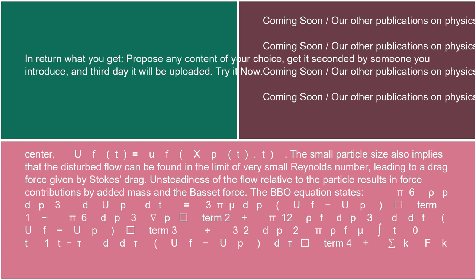Unsteadiness of the flow relative to the particle results in force contributions by added mass and the Basset force. The BBO equation states: (π/6) ρp dp³ (dup/dt) = 3π μ dp (uf − up) [Term 1] − (π/6) dp³ ∇p [Term 2] + (π/12) ρf dp³ (d/dt)(uf − up) [Term 3] + (3/2) dp² √(π ρf μ) ∫[t0 to t] (t − τ)^(−1/2) (d/dτ)(uf − up) dτ [Term 4] + Σk fk [Term 5].